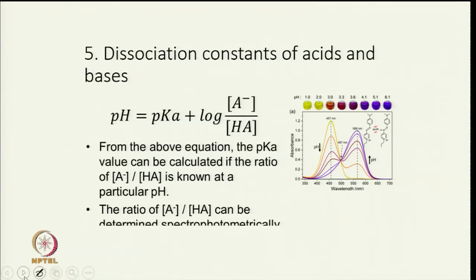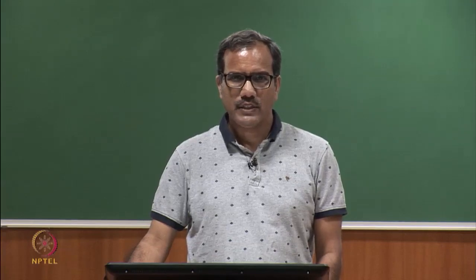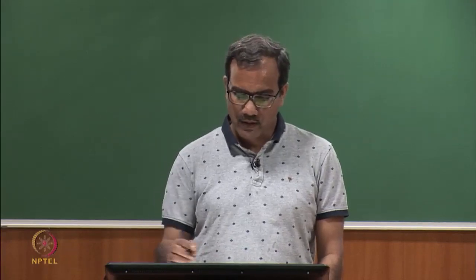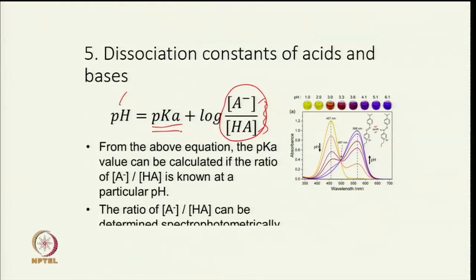In the last lecture I started discussing about how to get dissociation constants of acids and bases. As you remember, the Henderson-Hasselbalch equation is pH = pKa + log([A⁻]/[HA]). This is basically the salt-to-acid ratio. If we can determine the salt and acid ratio at a particular pH, we can know the pKa value — and that is what we try to do using UV visible spectroscopy.